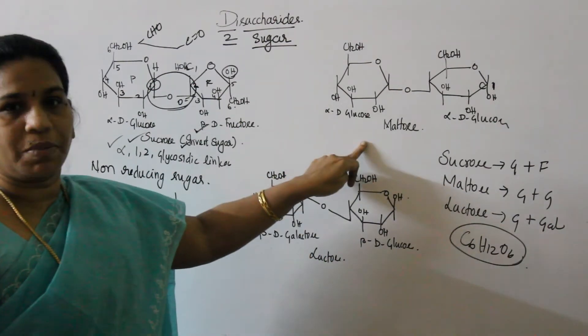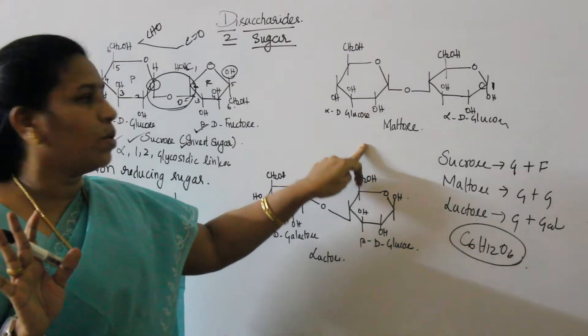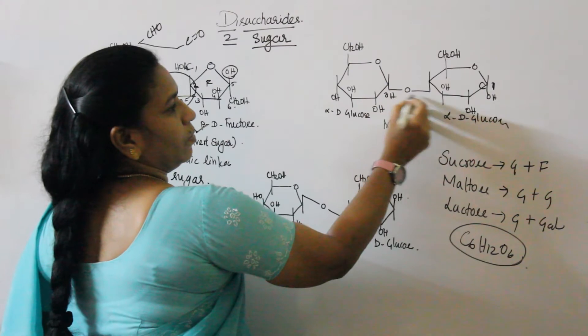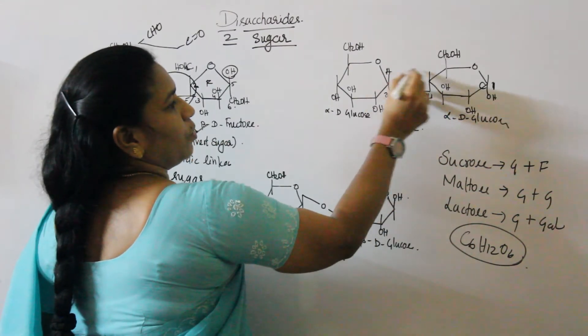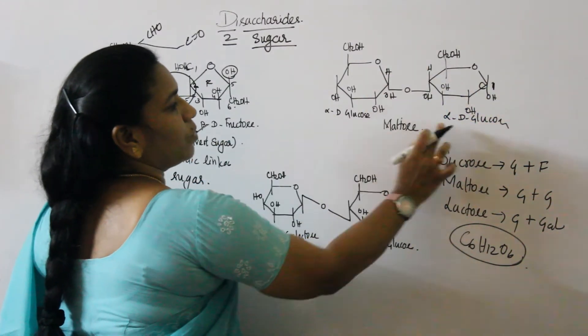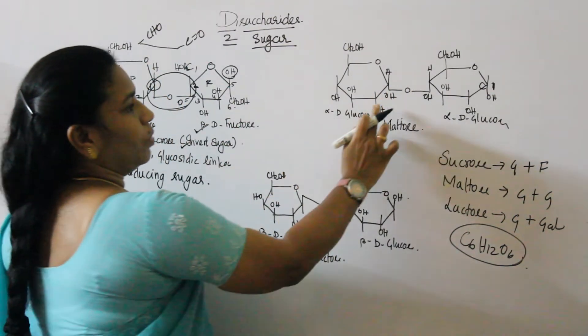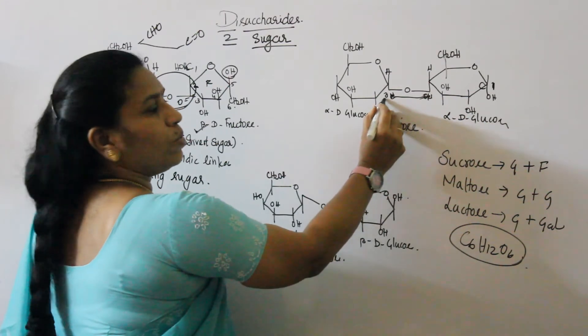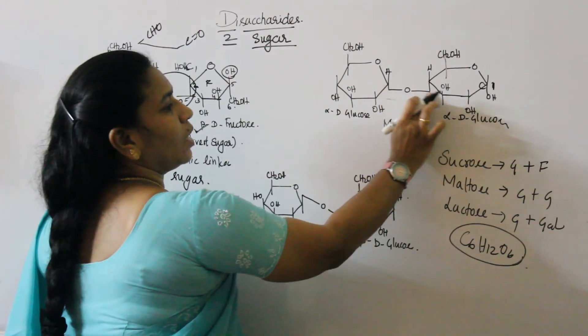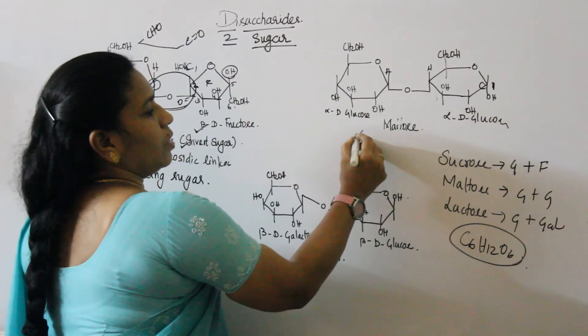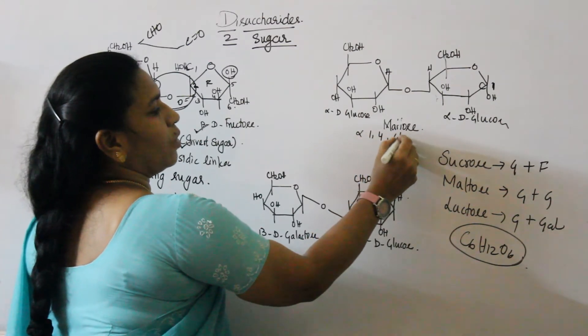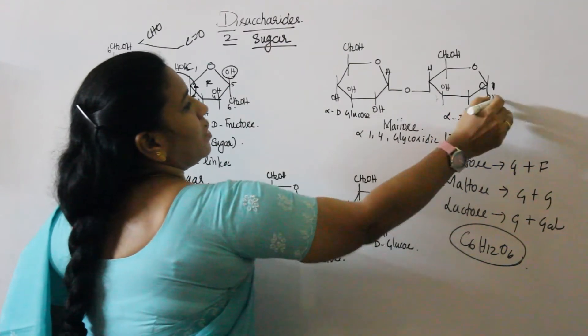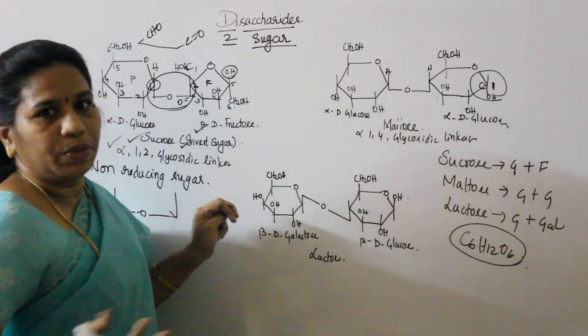But in maltose, the first carbon will be free. CHO is free. Maltose and lactose are reducing sugars. In maltose structure, there are two molecules of glucose - two molecules of alpha-D glucose. They join to form alpha 1,4 glycosidic linkage. Since the aldehyde group is free, it is called a reducing sugar.